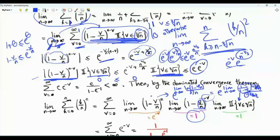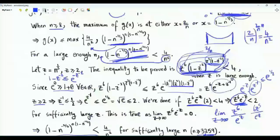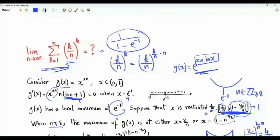Summing e^(-v) from v = 0 to infinity gives a convergent geometric series with ratio e^(-1), equal to 1/(1 - e^(-1)). Therefore, the original limit is 1/(1 - e^(-1)).